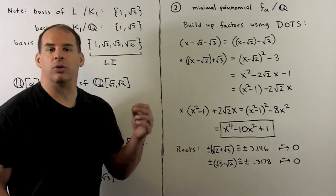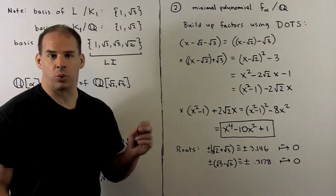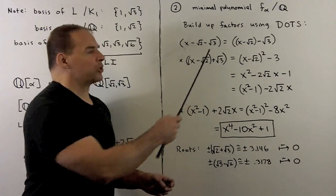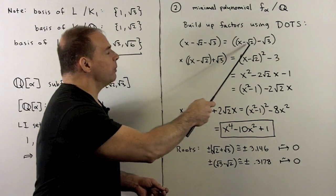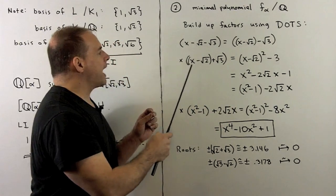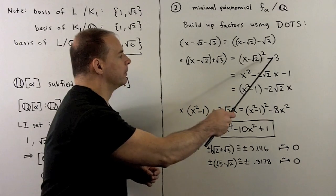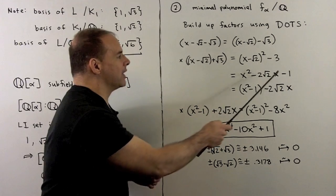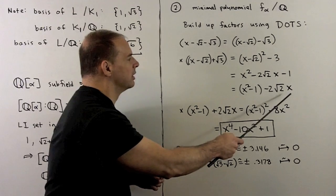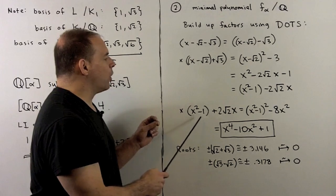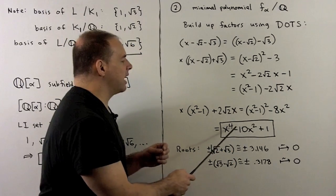Next, I want to find the minimal polynomial of alpha over the rationals. Here I can build things up in a straightforward manner since we're only using square roots — the key is difference of two squares. We know this polynomial has alpha as a root, so we start with (x − √2 − √3). Grouping x with √2 and multiplying by the conjugate (x − √2 + √3) gives a difference of two squares: (x − √2)² − 3, which expands to x² − 2√2·x − 1. Regrouping as (x² − 1) − 2√2·x and multiplying by the conjugate (x² − 1 + 2√2·x) again gives a difference of two squares, leading us to x⁴ − 10x² + 1.